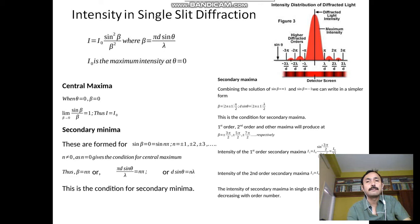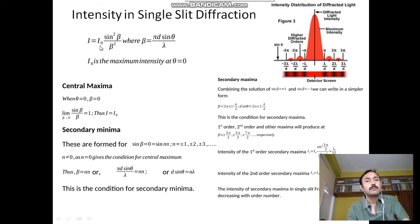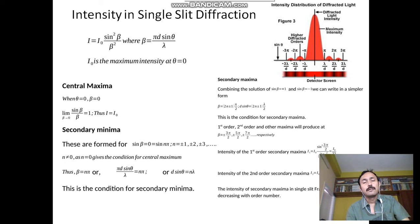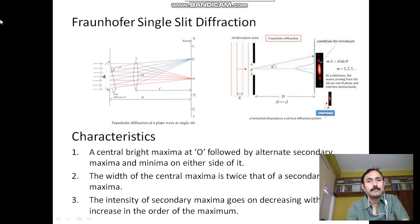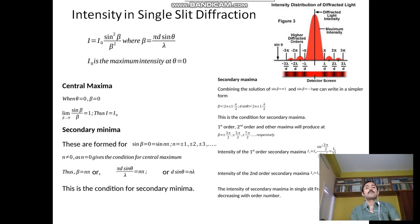The intensity of single slit diffraction can be calculated as: I = I₀ sin²β / β², where β = π d sinθ / λ. Here, d is the slit width, λ is the wavelength of light, and θ is the angle of bending — the angle through which the light is bent. I₀ is the maximum intensity at θ = 0, since as β tends to 0, sinβ/β becomes 1.